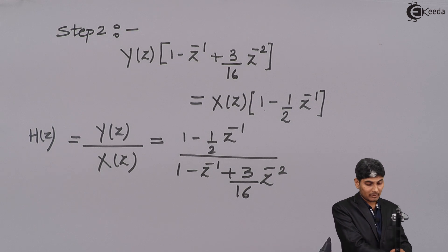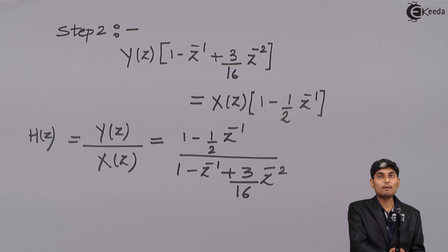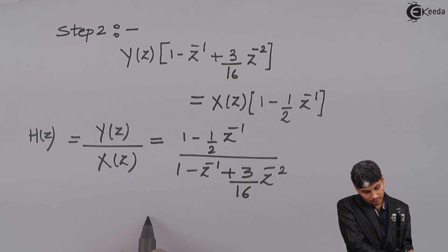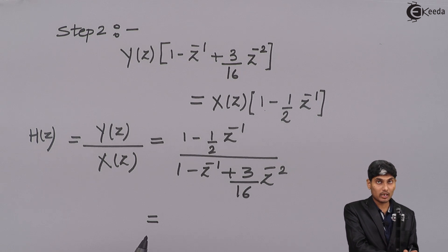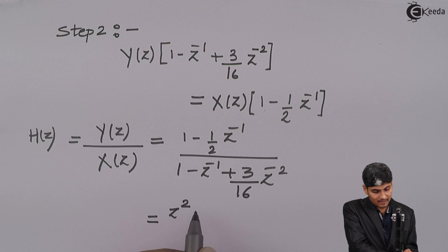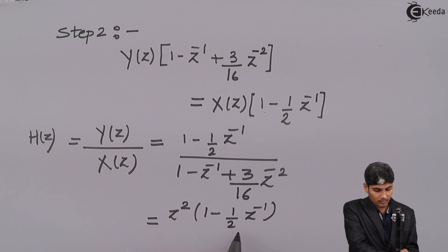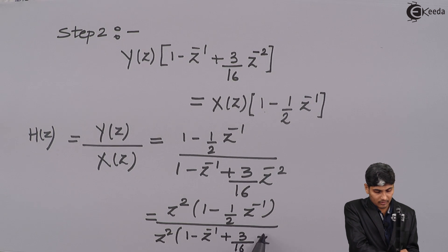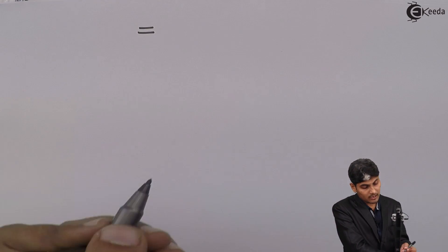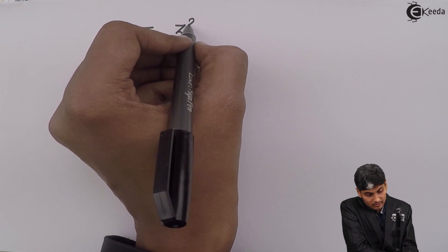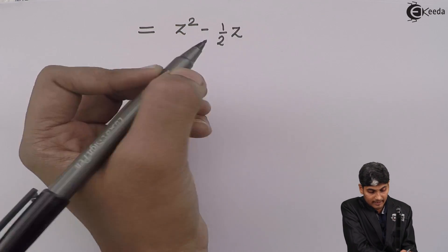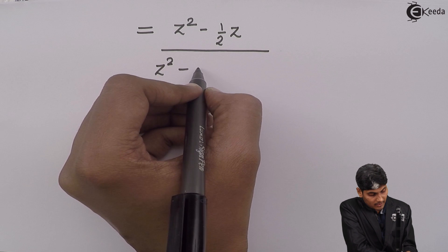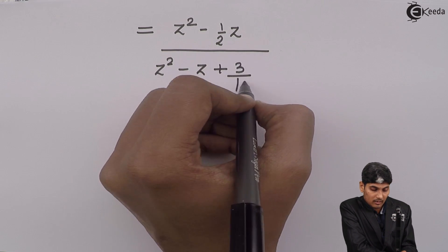Now to apply our mathematics we will convert all z⁻¹ (negative powers) to positive powers. We multiply and divide by z² in numerator and denominator. Taking z² inside gives us (z² - (1/2)z) in the numerator divided by (z² - z + 3/16) in the denominator.